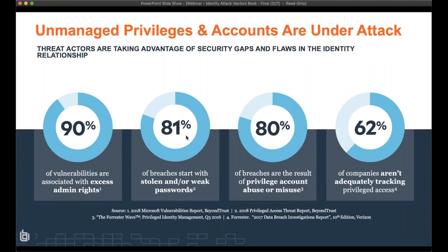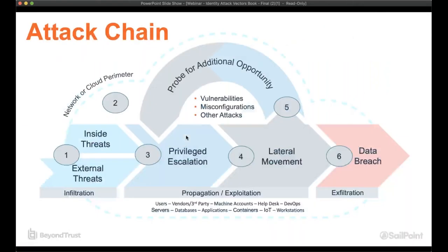When you look at the statistics: 90% of vulnerabilities are associated with excessive admin rights, meaning that if you remove admin rights you can mitigate the threats from vulnerabilities. And 80% of breaches are the result of privileged account abuse or misuse. Those privileged accounts are the ones being targeted by threat actors. But you can't just manage those alone — that's what privileged access management does, but it's not a complete picture. Modern threats target privileges and assets together, requiring a formal identity governance model.